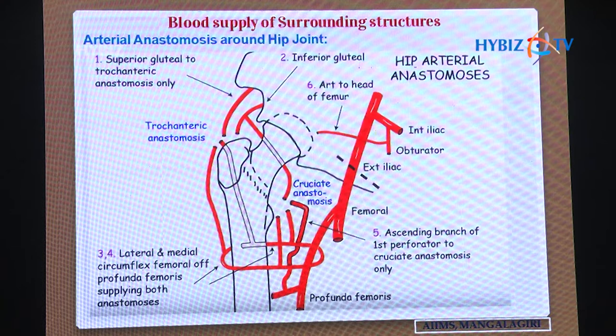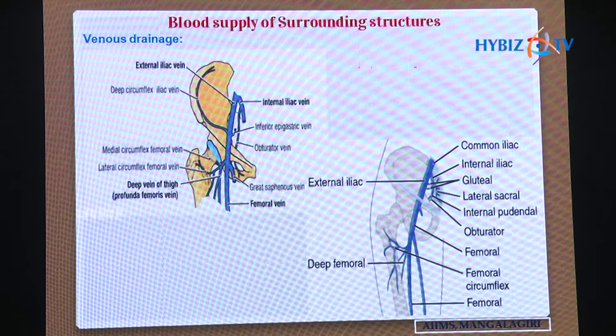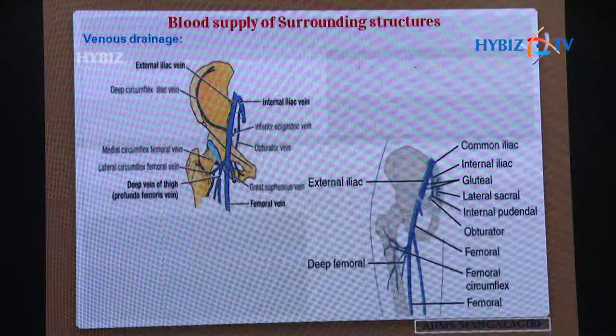Apart from arterial supply, venous drainage is equally important. When we talk about blood supply, it encompasses both arterial and venous components. The veins are numerous due to weight transmission and venous return, but the major veins correspond to the arteries. The surrounding muscles and ligaments derive branches from the superior and inferior gluteal arteries.